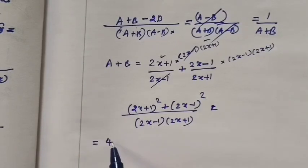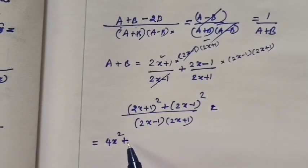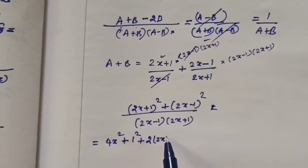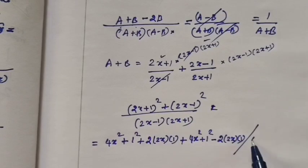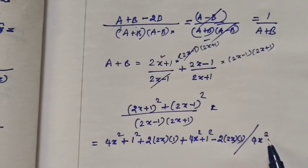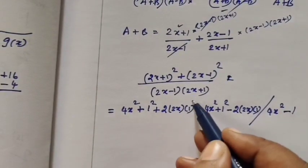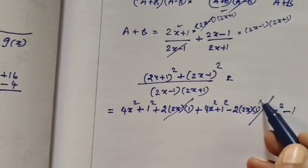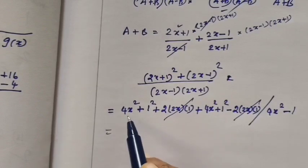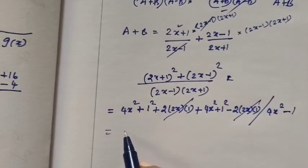So equal to a squared plus b squared plus 2ab: 2 into 2x into 1. So 4x squared minus 1 will cancel out, then minus 1 will cancel out, then cancel out, then cancel out. So 4x squared, then 4x squared add.